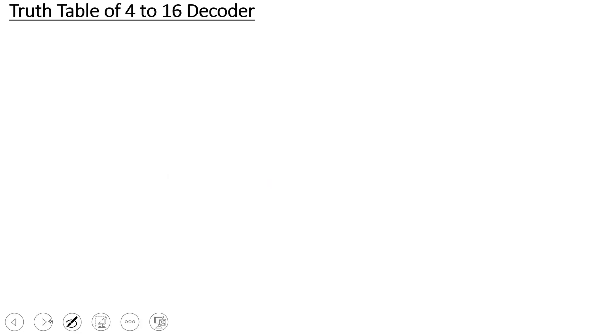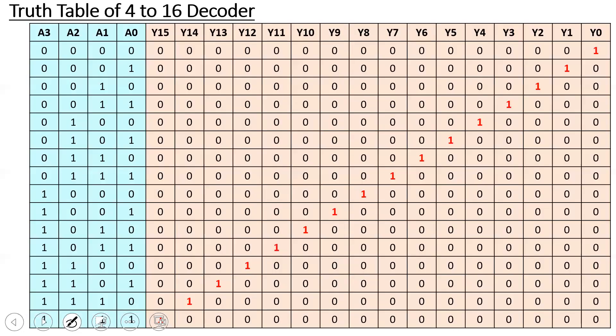Let's explain the truth table. For the 4-to-16 decoder, there are 4 inputs and 16 outputs. The 4 inputs are a3, a2, a1, and a0. The outputs are y0 through y15, giving 16 output lines. With 4 inputs, the combinations range from 0,0,0,0 to 1,1,1,1.